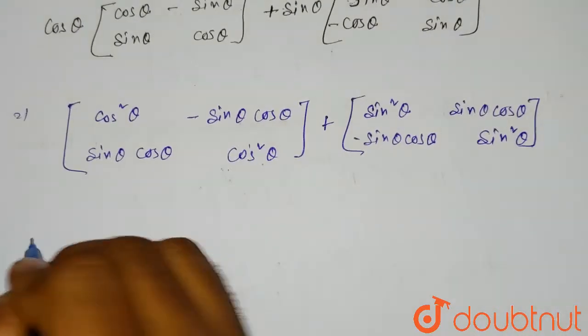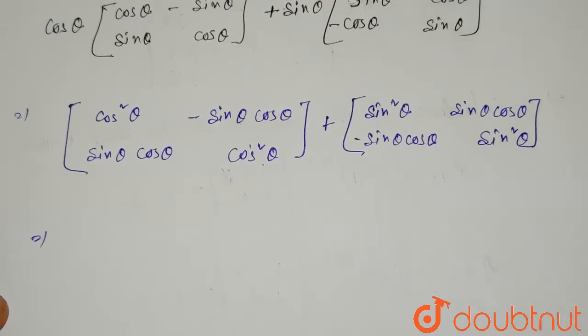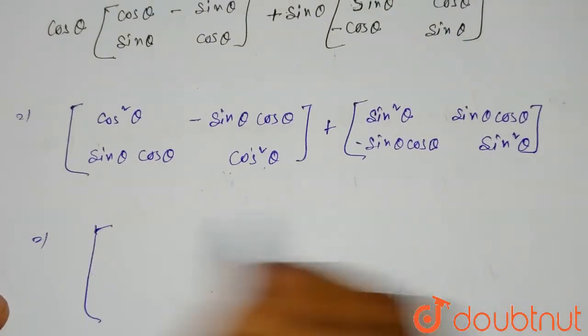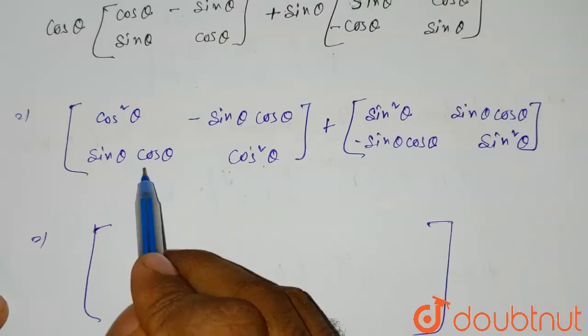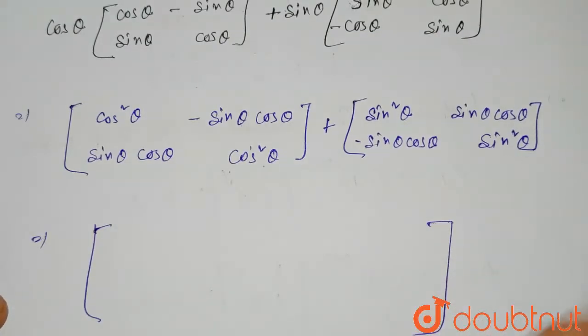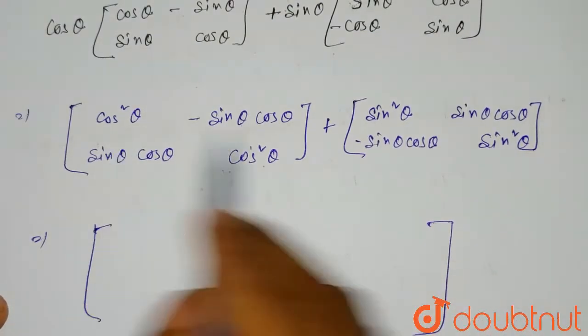Now what we have to do? We have to add them from here. Now we will add them. So if we add them, the first element will be added with the first one, second with the second, third with the third, and the fourth element will be added with the fourth one. So cos square theta will be added with sin square theta.